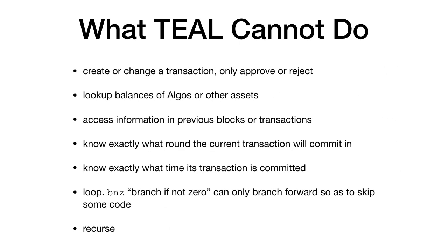There are several things that Teal cannot do — things we've omitted for simplicity, efficiency, and to make sure that Teal contracts running on the Algorand network keep everything running fast and efficient. You cannot create or change a transaction, only examine a transaction and approve it or reject it. Teal cannot look up balances of Algos or other assets. Teal cannot access information in previous blocks or transactions, as that would involve a potentially large amount of storage seek time that we can't guarantee will be fast enough.